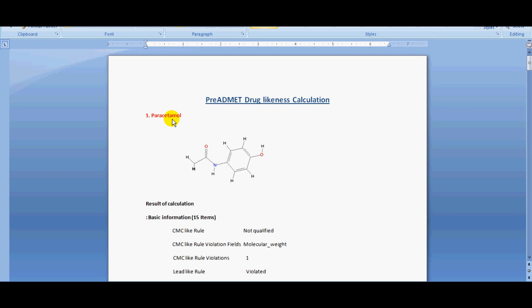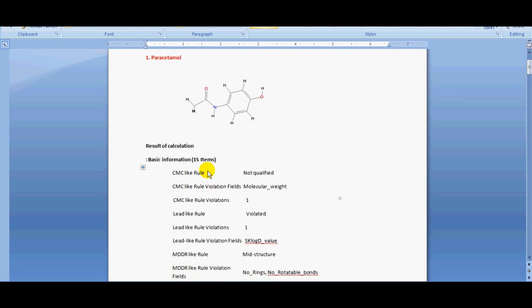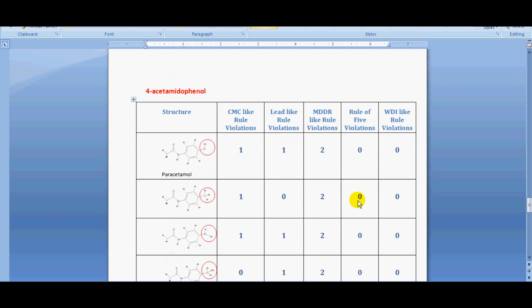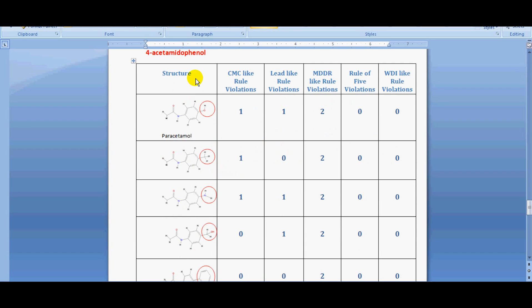Now we can analyze the result in the document. Each substitution and result of the drug likeness prediction calculation are given separately and tabulated. From the table, we can understand that each rule has different conditions to consider a compound as druggable.